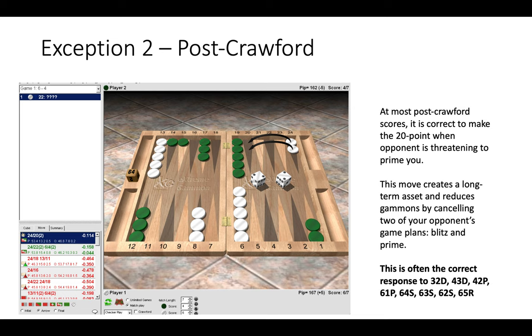So the 20 point is called the golden point for a reason. It's a long-term asset which we definitely need at post-Crawford. And this is often the correct response to those opening roles you can see on the right hand side.